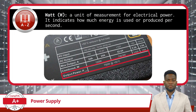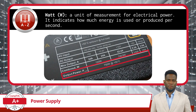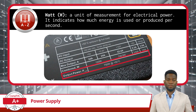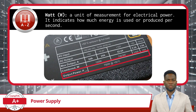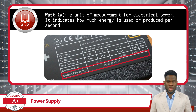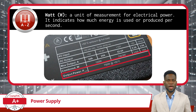Now that you understand voltage and how it is applied to power supply units, the next term is watt. A watt is a unit of measurement for electrical power — it indicates how much energy is used or produced per second. Wattage, in the context of computer hardware, refers to the measure of electrical power that a PSU can deliver to a computer system. It is a critical specification to consider when selecting a PSU, as its wattage rating indicates maximum power output capacity, which determines the number and type of components it can reliably power.